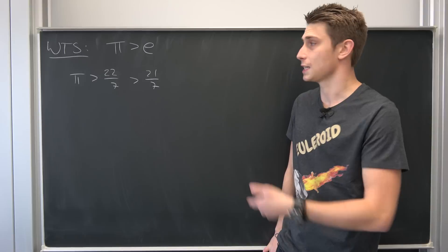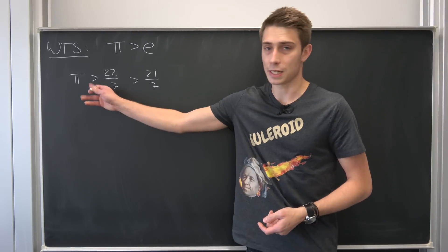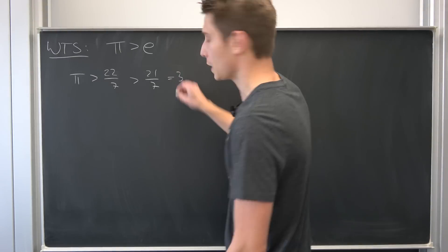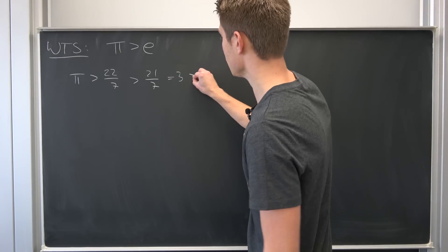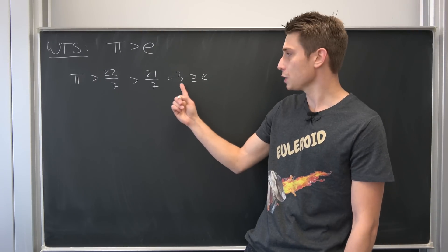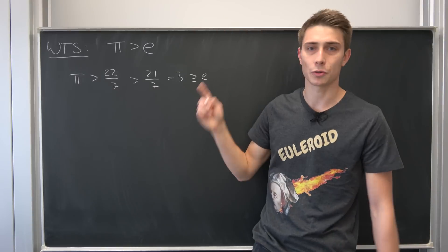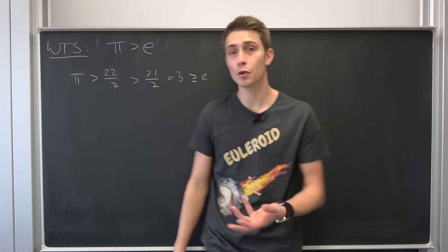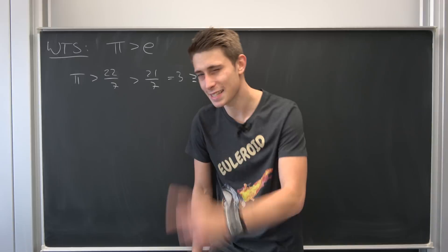Okay, so for us, it's enough to show now, due to the transitivity of this order relation right here, that this 3 right here is indeed greater than our e, or equal, it doesn't matter. So if this is greater than 3 and 3 is greater than e, then π is going to be greater than e. Naturally. Try it out for yourself with natural numbers. It does make sense actually.